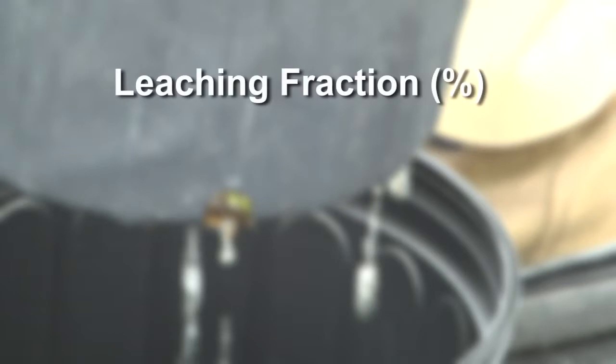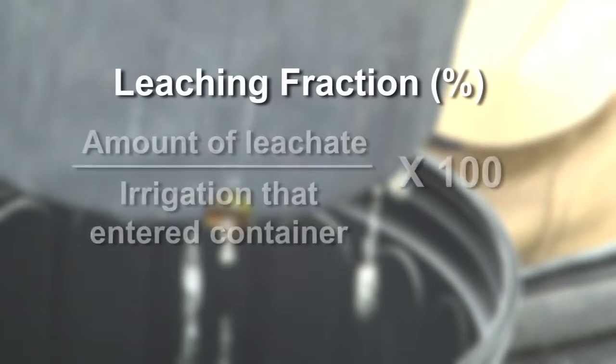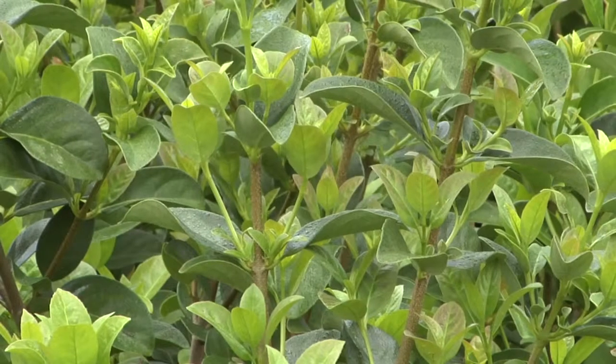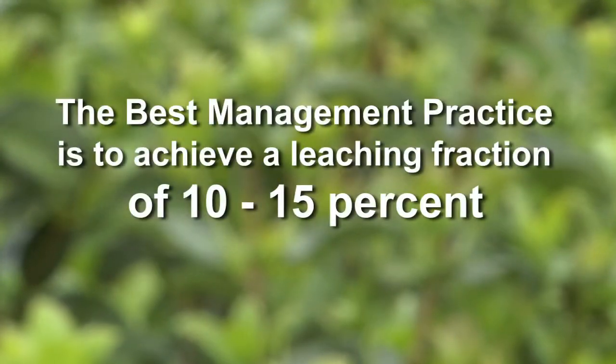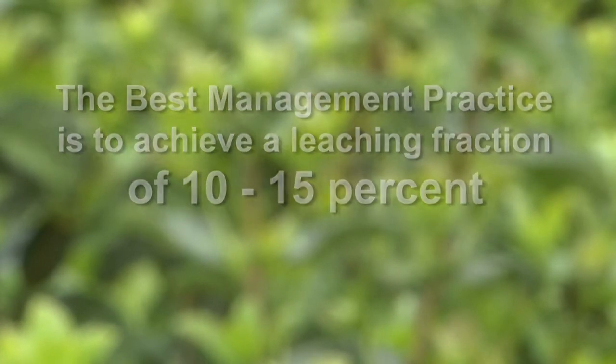Leaching fraction is the amount of leachate divided by the amount of irrigation that entered the container, multiplied by 100 to convert to percent. The best management practice is to achieve a leaching fraction of 10 to 15 percent.